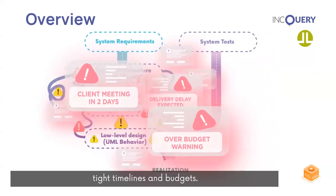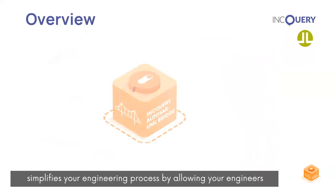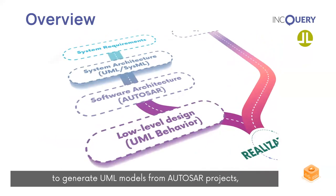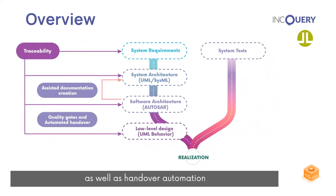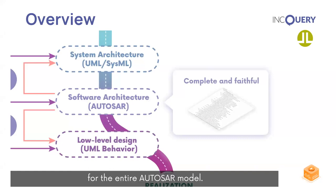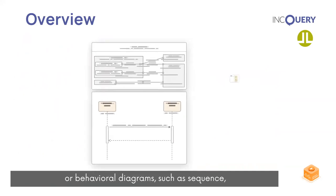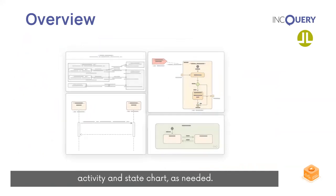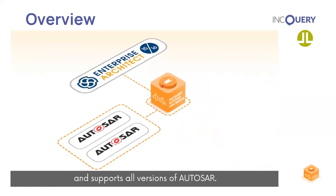Furthermore, as a project progresses and complexity grows, keeping AUTOSAR and UML in sync can be a delivery blocker, especially when you are already grappling with tight timelines and budgets. Inquiry's novel AUTOSAR UML Bridge simplifies your engineering process by allowing engineers to generate UML models from AUTOSAR projects with the push of a button — for both documentation purposes and handover automation. The bridge creates a complete UML and SysML representation for the entire AUTOSAR model, enriched with architectural and behavioral diagrams. It seamlessly integrates with Sparx Systems Enterprise Architect 15 and 16 and supports all versions of AUTOSAR.